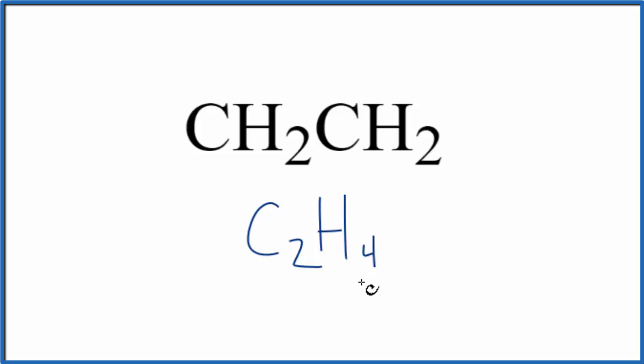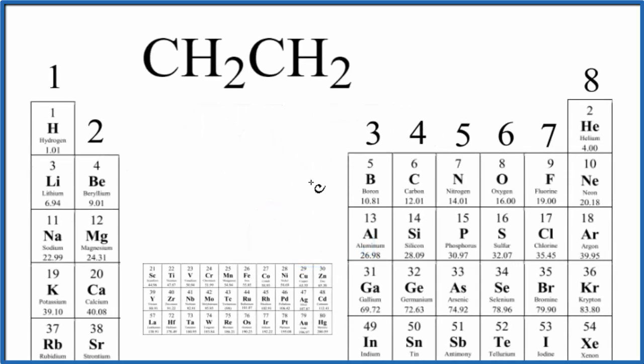So the first thing we need to do is count up the valence electrons so we can draw the Lewis structure for CH2CH2. We have the periodic table here organized where the groups show us how many valence electrons we have for these core elements. We skip the transition metals. So we find carbon, carbon's right here in group 14, sometimes called 4A. It has four valence electrons.